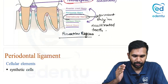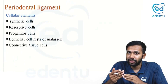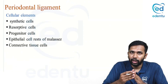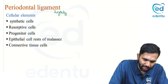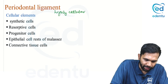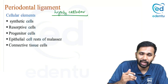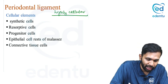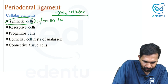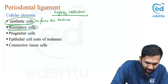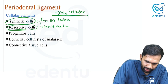The oblique group of fibers is present in the maximum quantity and resists the maximum occlusal force. In addition to fibers, the periodontal ligament is rich in cells — as the definition states, it is highly cellular. The periodontal ligament has both synthetic cells, which form tissues, and resorptive cells, which degrade or break down tissues.